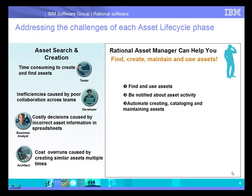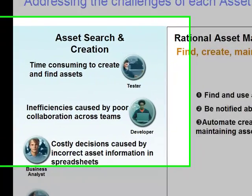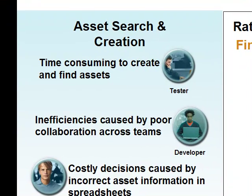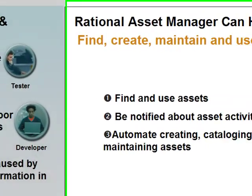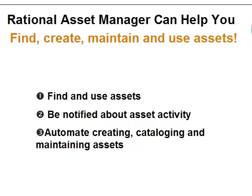In our first scenario, we're going to look for assets. I'm going to be Bob, the analyst. Bob, as well as developers, business analysts, and architects, often have trouble finding the assets they need. There are inefficiencies caused by teams not being able to effectively collaborate on assets as they're being built or negotiated. Oftentimes these assets are managed in spreadsheets. We're going to show how Bob can quickly find and use assets, be notified about asset activity, collaborate, and also submit assets — along with some new capabilities we've introduced.